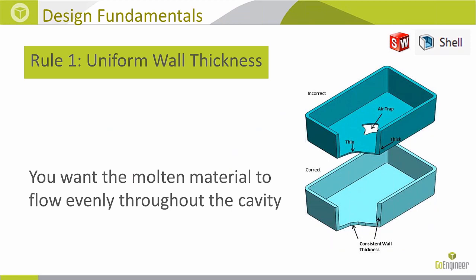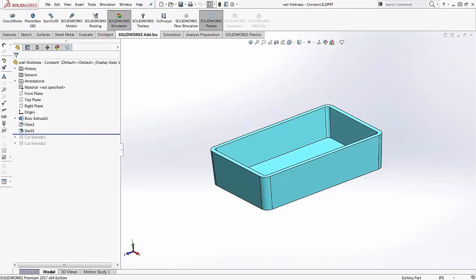Design rule number one is that you want a uniform wall thickness. This is a fundamental rule because you want the molten material to flow evenly throughout the cavity. Non-uniform wall thickness can create significant problems in the injection molding process.